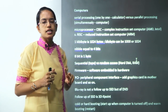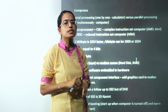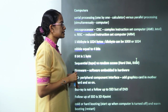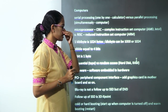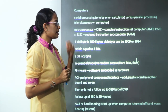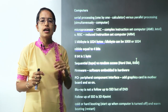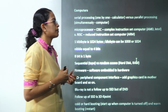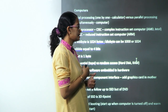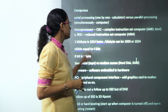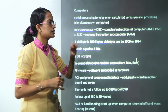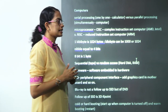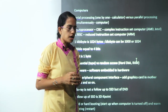Microprocessors are of two types: CISC and RISC. CISC is Complex Instruction Set Computer, mainly seen in microprocessors designed by AMD and Intel. RISC, which is Reduced Instruction Set of Computers, is basically designed by ARM.